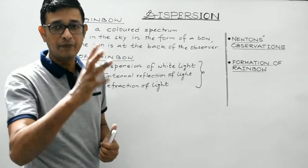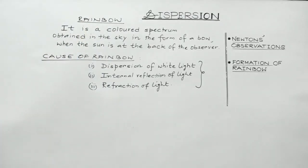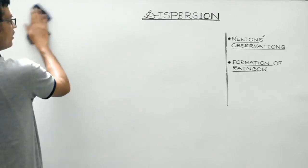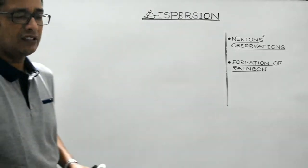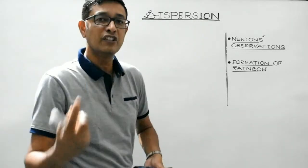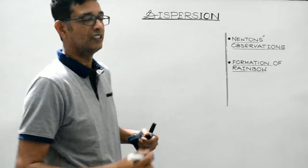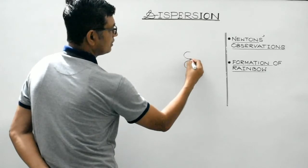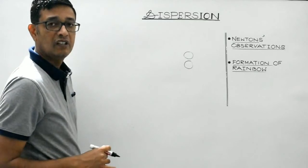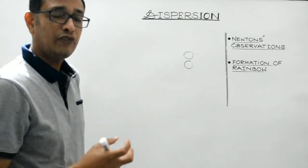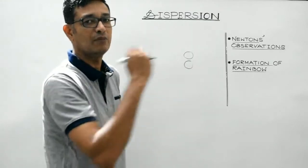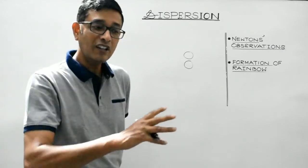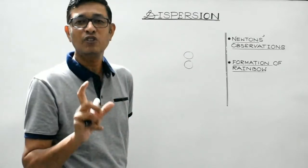We will now discuss rainbow in detail with the help of a ray diagram. There can be one, two, three, or even four internal reflections, and accordingly different types of rainbows are formed. Suppose these are water droplets suspended in air. For the formation of rainbow, water droplets need to be suspended in the atmosphere, a condition fulfilled only during light drizzle or immediately after rain. The rainbow forms in the sky, and for primary and secondary rainbow the sun should be at the back of the observer.